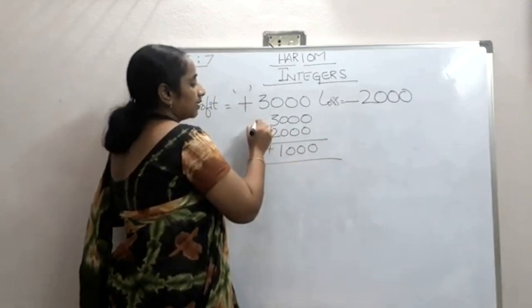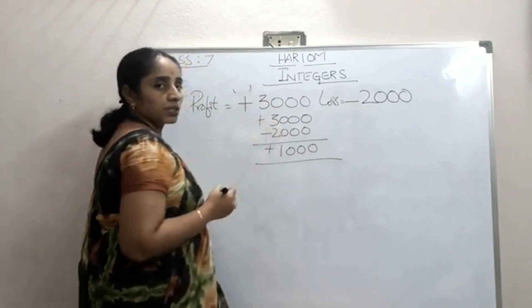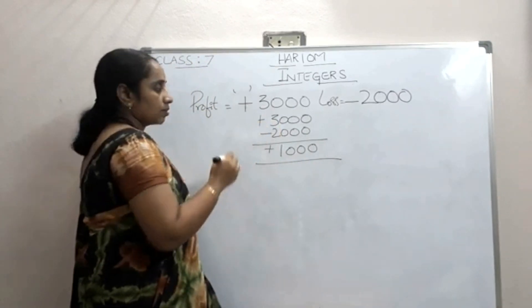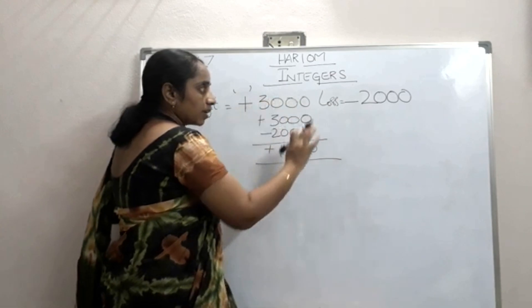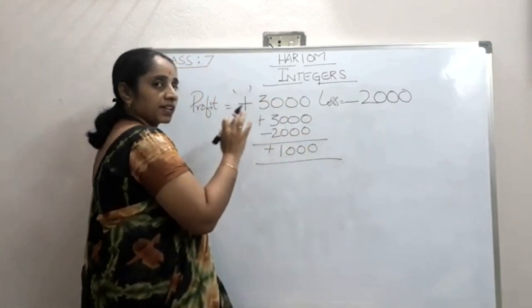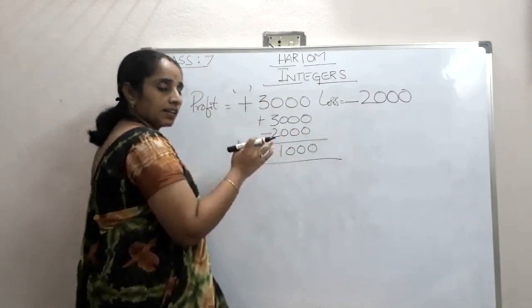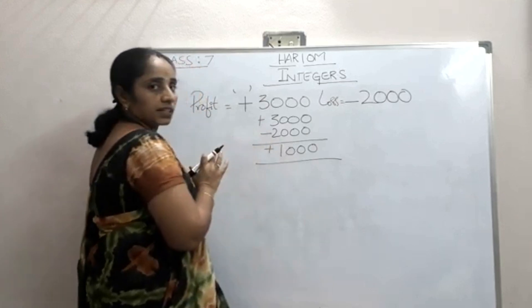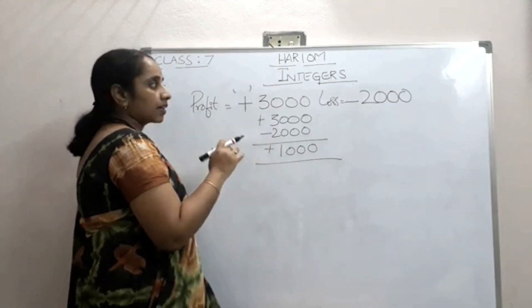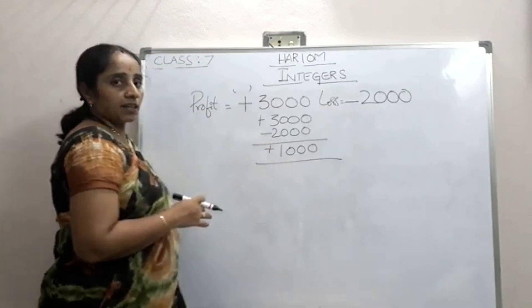So if it is profit, plus; if it is a loss, minus. Overall, what about his financial status? Here one is positive and another is negative, so we have to subtract. By subtracting, we get plus 1,000 only, because the greater one is positive — so overall his financial status is in profit.